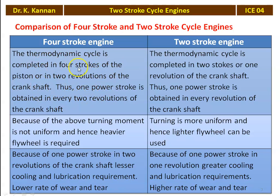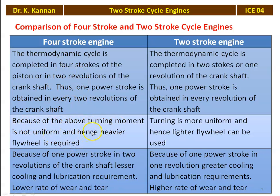For the same size of the engine — same diameter, same stroke length — the 2-stroke cycle engine produces more power than the 4-stroke cycle engine. In the 4-stroke cycle engine, the turning moment is not uniform, hence heavier flywheels are required to store energy and supply it during the three non-power strokes. In the 2-stroke cycle engine, the turning moment is almost uniform and lighter flywheels can be used.